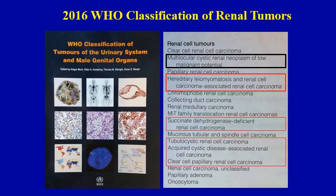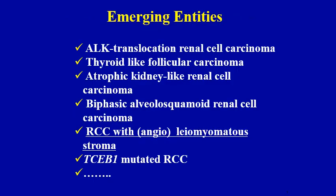With improved understanding in the molecular biology of renal cell carcinoma, we have recently witnessed an explosion of new tumor entities. Many of these entities have already found a place in the 2016 WHO blue book, but many tumor entities are still considered emerging or provisional. RCC with leiomyomatous stroma and TCEB1-mutated renal cell carcinoma — which I will show are highly related entities — are included within these provisional or emerging tumor entities.